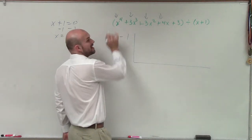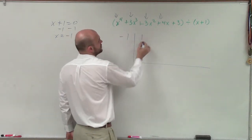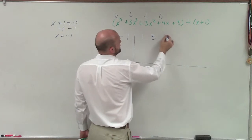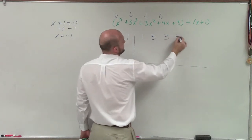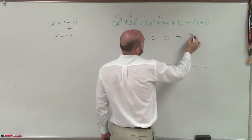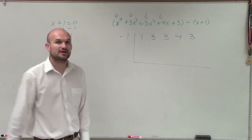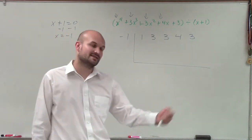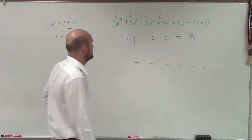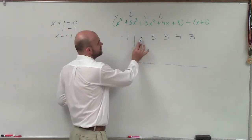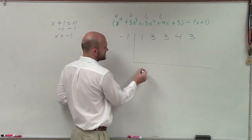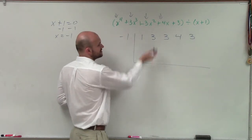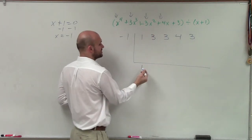Now I just need to write the coefficients. Remember, x to the 4th has a coefficient of 1, then 3, 3, 4, 3. Now the algorithm for synthetic division: the first number we bring straight down, which is 1. Then we multiply diagonally and add vertically.